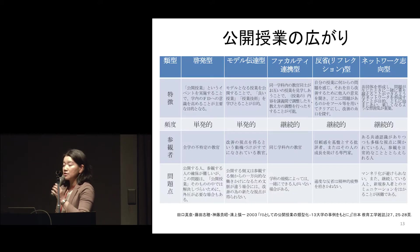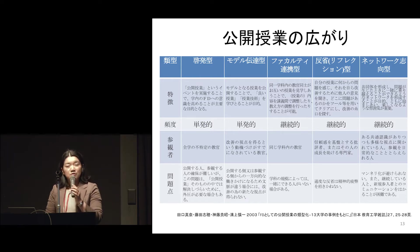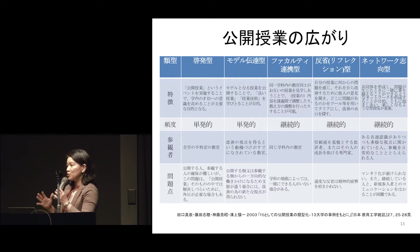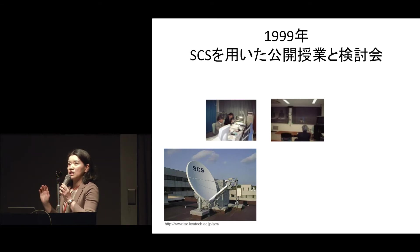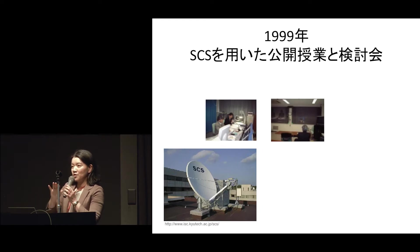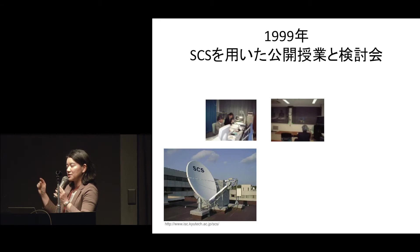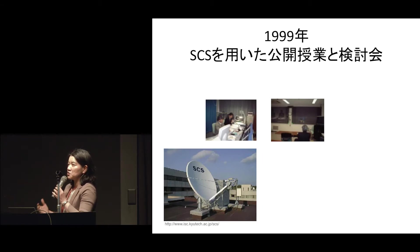The OpenClass practice was expanded and extended with many purposes. But people said that visiting Kyoto University every week was quite difficult, so we started to use SCS — the Satellite Communication System. Because in those days, internet was not fast enough, we tried SCS to connect the Kyoto U class with other faculty's offices.